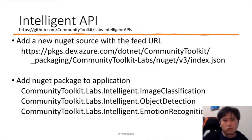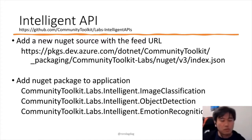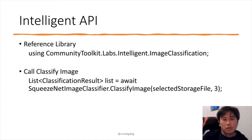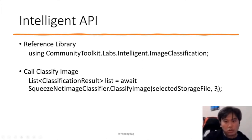There are a few steps involved to use the Community Toolkit. First, you go to the NuGet package source, identify where to get these packages, and today we'll talk about image classification. If I just want to add image classification to my application, I can use it: you reference the Community Labs Intelligent image classification library and call one command — SqueezeNetImageClassifier.ClassifyImage — send an image, and it returns three top items with results.